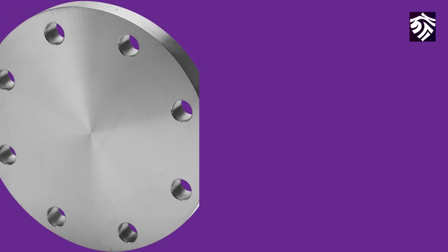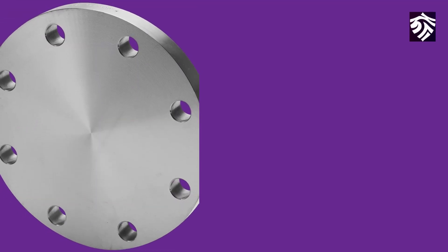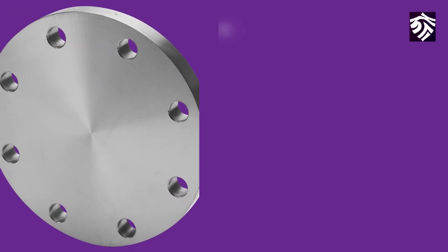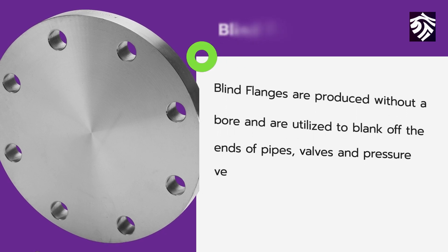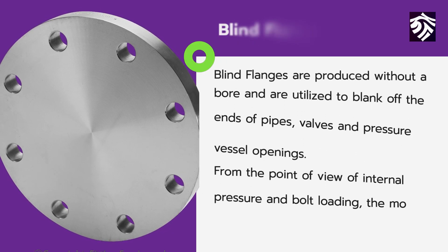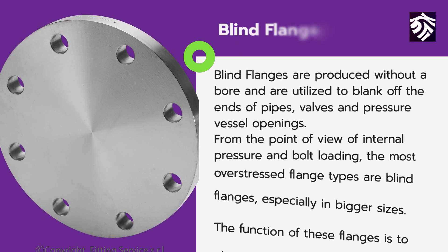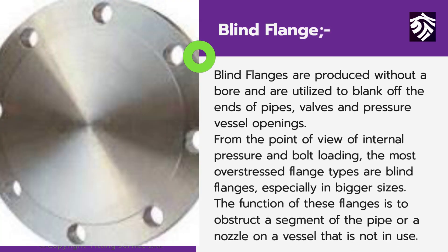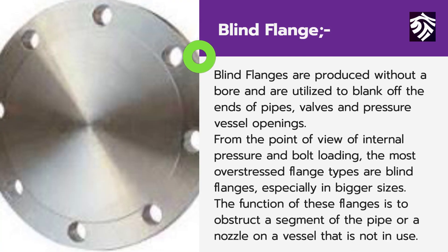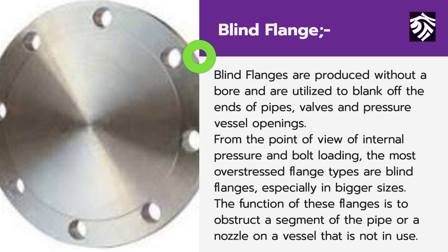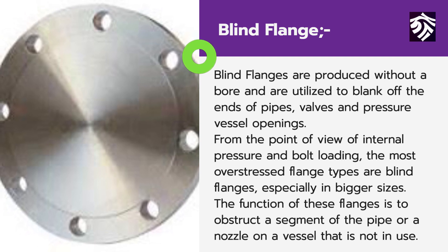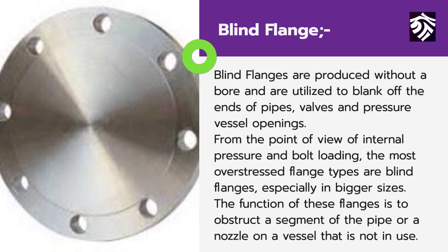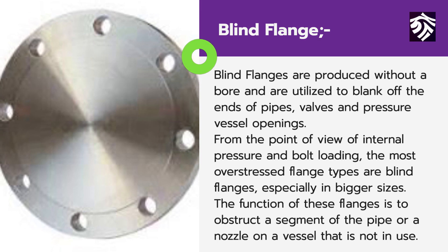Blind flanges are produced without a bore and are utilized to blank off the ends of pipes, valves, and pressure vessel openings. From the point of view of internal pressure and bolt loading, blind flanges are the most overstressed flange type, especially in bigger sizes. The function of these flanges is to obstruct a segment of the pipe or a nozzle on a vessel that is not in use.